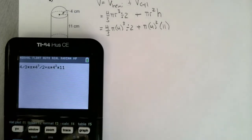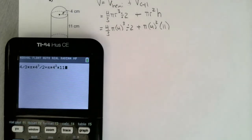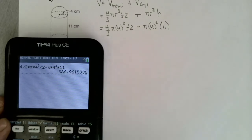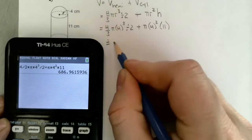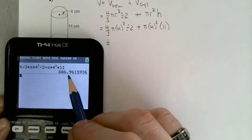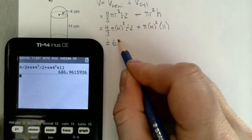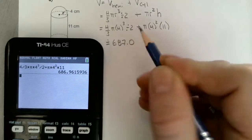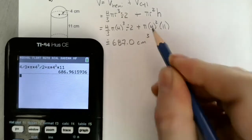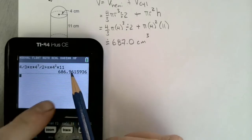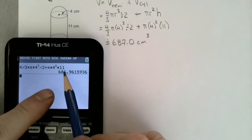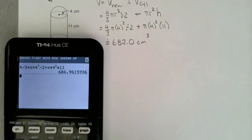I'm doing this all in one step on my calculator to minimize rounding errors. So: four divided by three times pi times four cubed, divide that by two — there's my hemisphere — plus pi times four squared multiplied by 11. And I get that my answer is approximately 687.0 centimeters cubed.